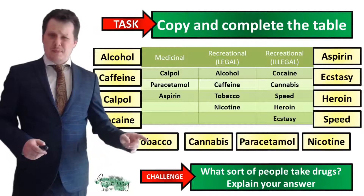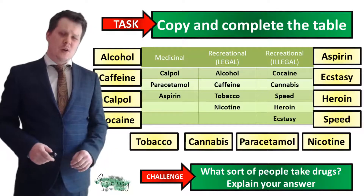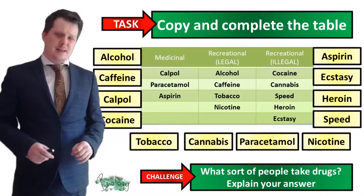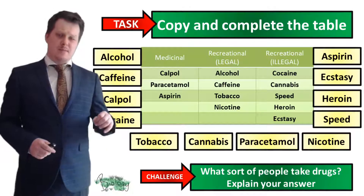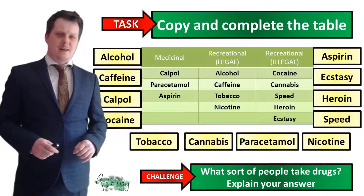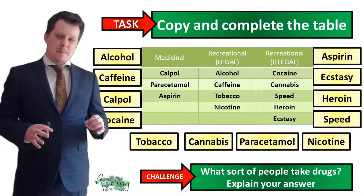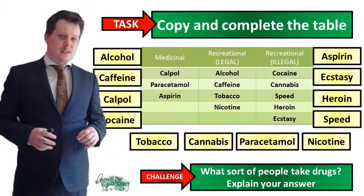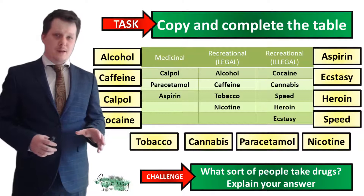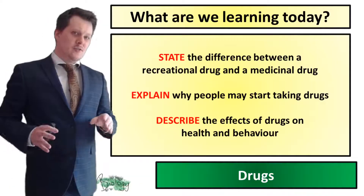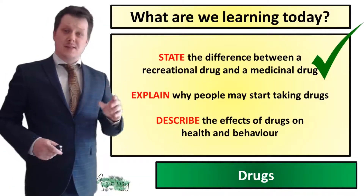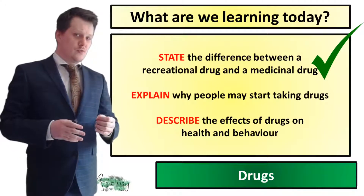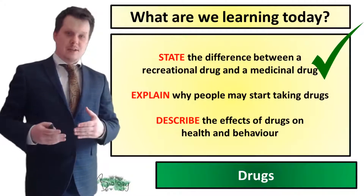Did you have a go at explaining what sort of people take drugs? Well, if you look at this table, everybody takes drugs in one way or another — whether it be caffeine in their coffee, people smoke cigarettes, people drink beer and wine, and people take paracetamol, aspirin, ibuprofen, and Cowpol to kill pain. So now we can state the difference between a recreational drug, one that has no health benefits, and a medicinal drug, one that does have health benefits.